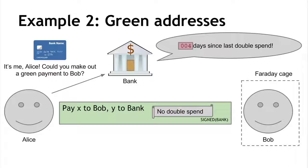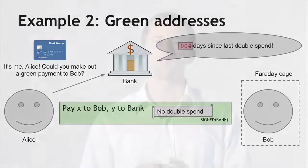If the bank ever does double-spend, trust in this whole system collapses pretty quickly. The two most prominent online services that implemented green addresses — Insta Wallet and Mt. Gox — both ended up collapsing. For that reason, green addresses aren't used as much today. People are quite nervous about putting too much trust in the bank, so while it's a cool protocol, it isn't used much in practice.